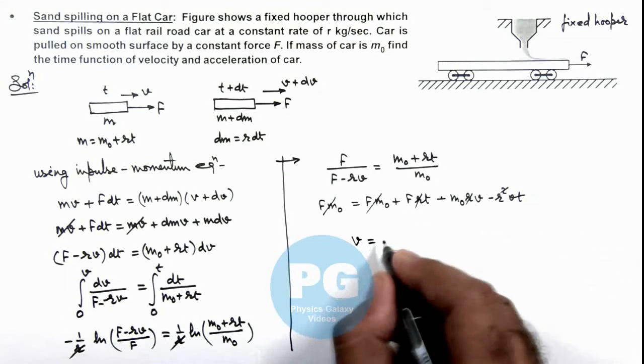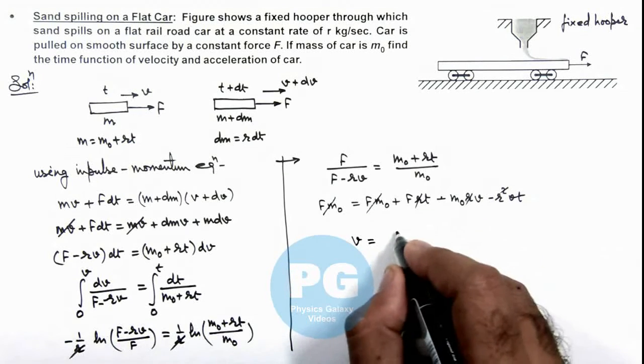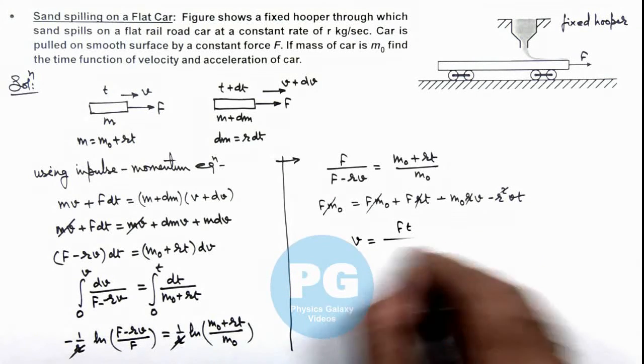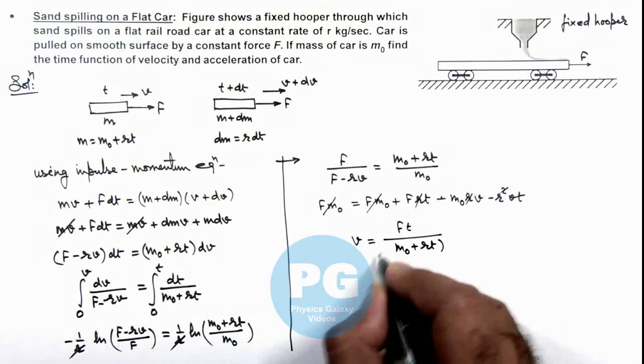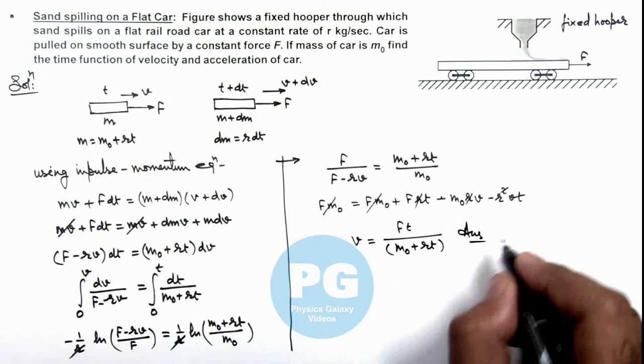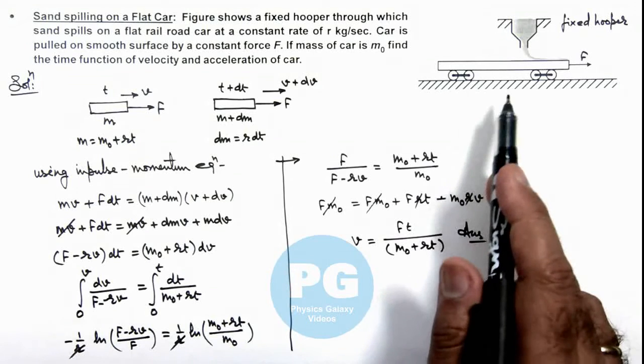So the final value of velocity of cart we can get as a function of time is Ft divided by (m₀ plus rt). This is one result of the problem, the velocity as a function of time for the cart.